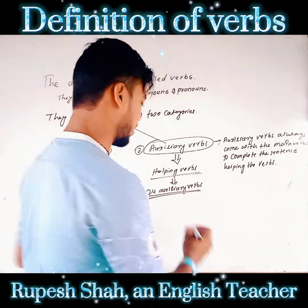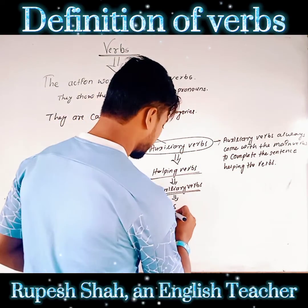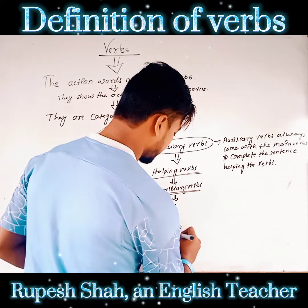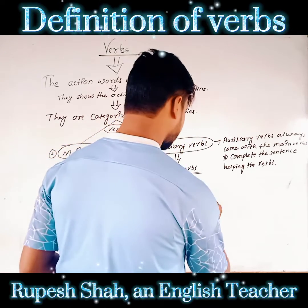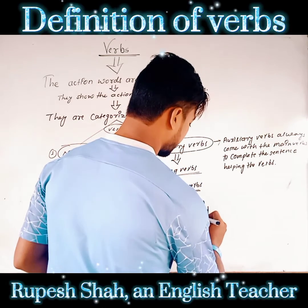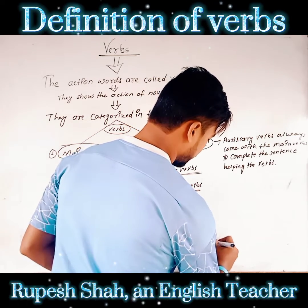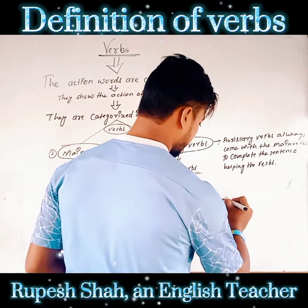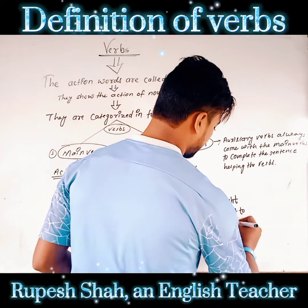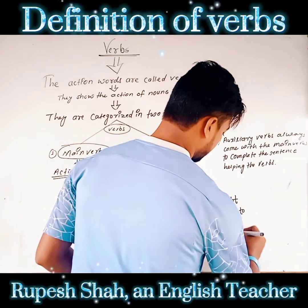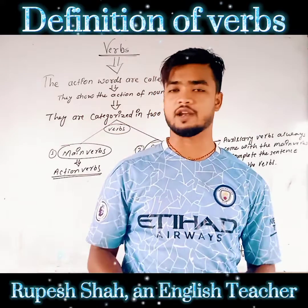Now, what are the auxiliary verbs? They are: is, am, are, was, were, have, has, had, can, could, shall, should, will, would, may, might, ought to, used to, need to, dare, and must. Please look on the screen and keep watching.